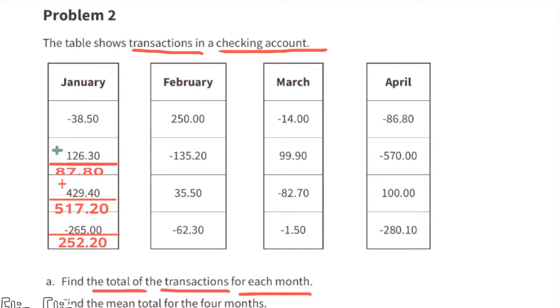And then finally we're going to take away another $265, and that gives us an ending balance for January of $252.20. Now let's look at the month of February.